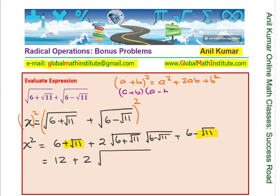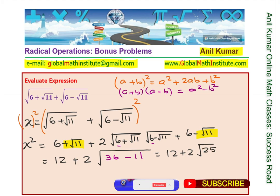When you multiply conjugates, a plus b times a minus b, you get a squared minus b squared. So in this case you get 6 squared which is 36, minus square root of 11 squared. Simplifying further: square root of 36 minus 11 is square root of 25, which is 5.